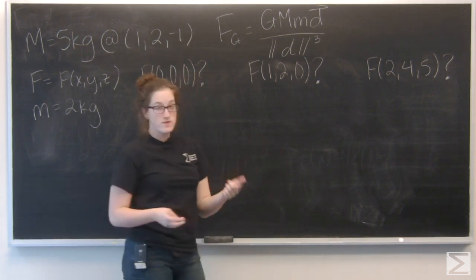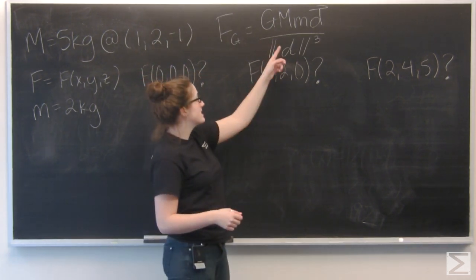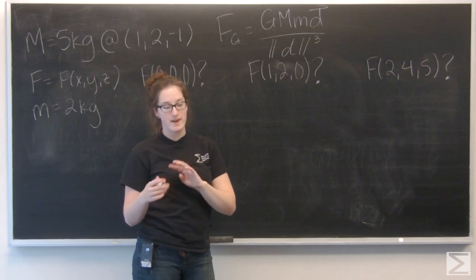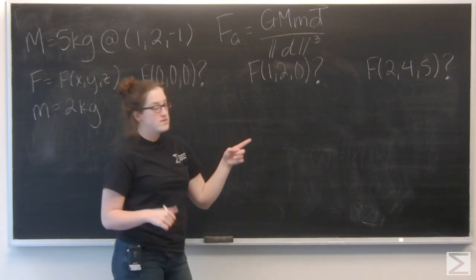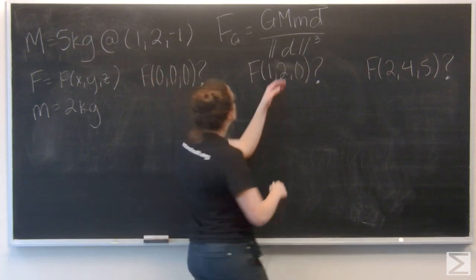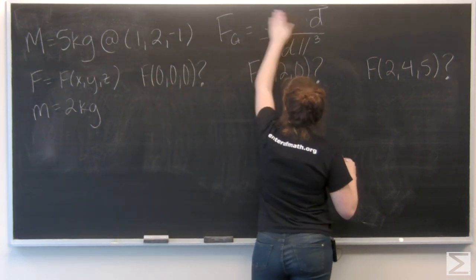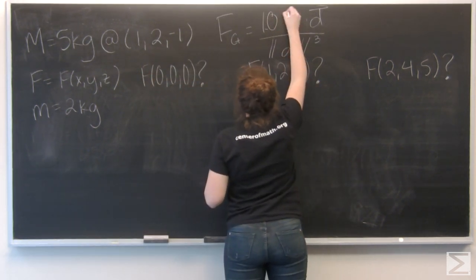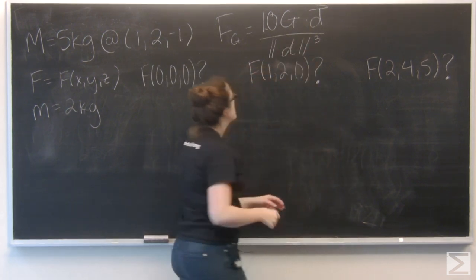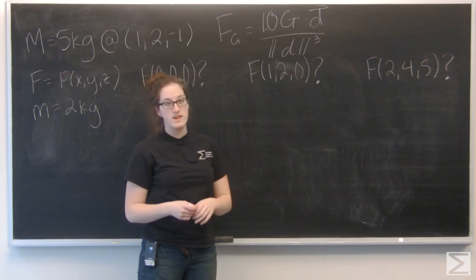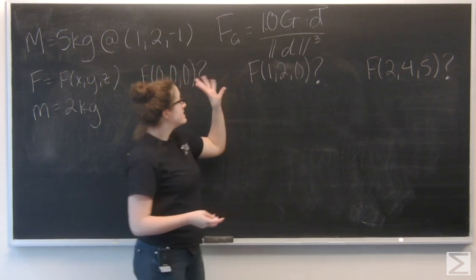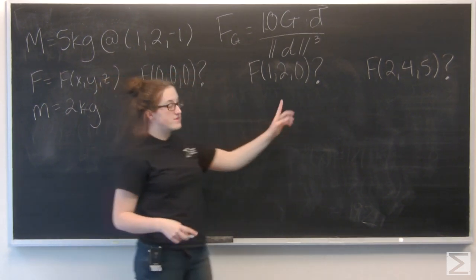Okay, so a few of these we already know. Big M and little m are 5 and 2. So I'm going to go ahead and put those in, 2 times 5 is 10. That is going to be a little bit easier to work with. And now we just need to figure out the D vector for each of these three points.